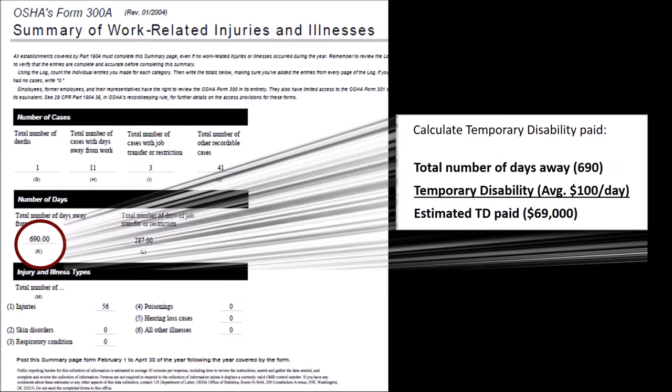To estimate your temporary disability costs, you can use an average of $100 per day for a temporary disability rate. By multiplying the number of lost days by the $100 per day average, you'll then have an estimate on how much temporary disability you paid last year. In this example, we can see that this employer had 690 lost days, multiplied by the average TD rate of $100 per day, giving us an estimated $69,000 in temporary disability costs.